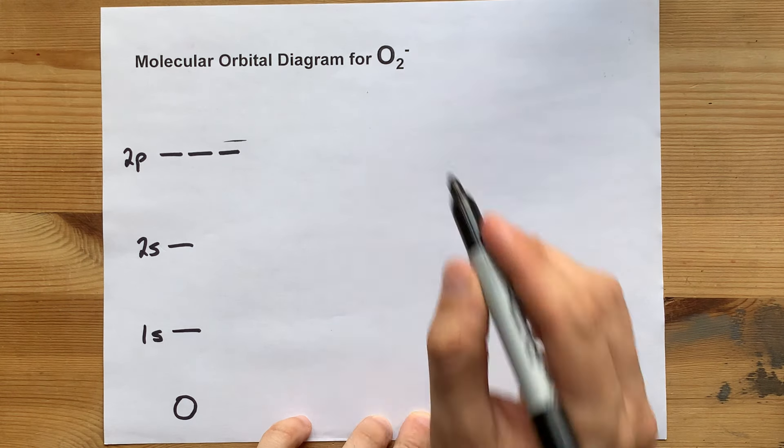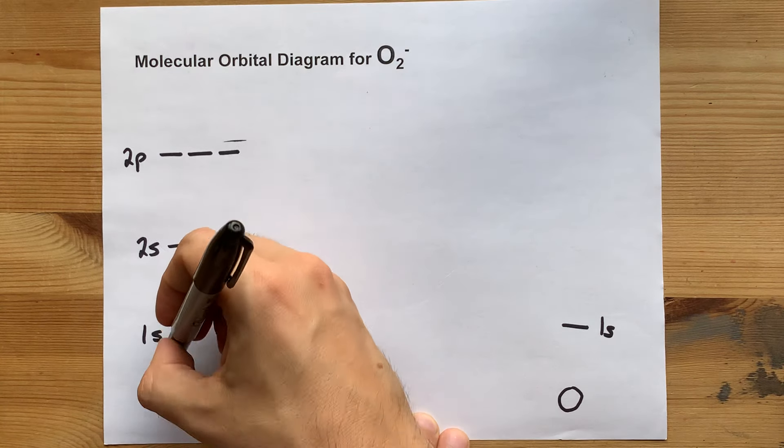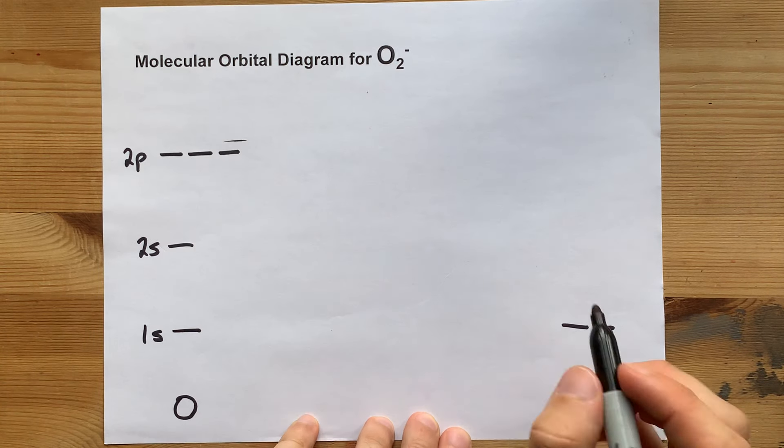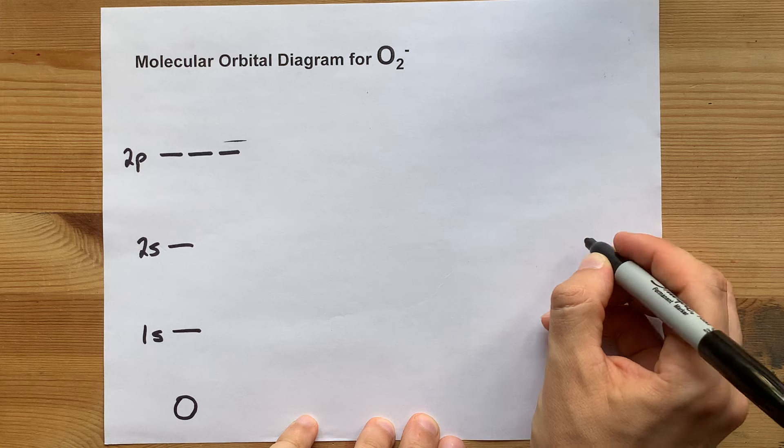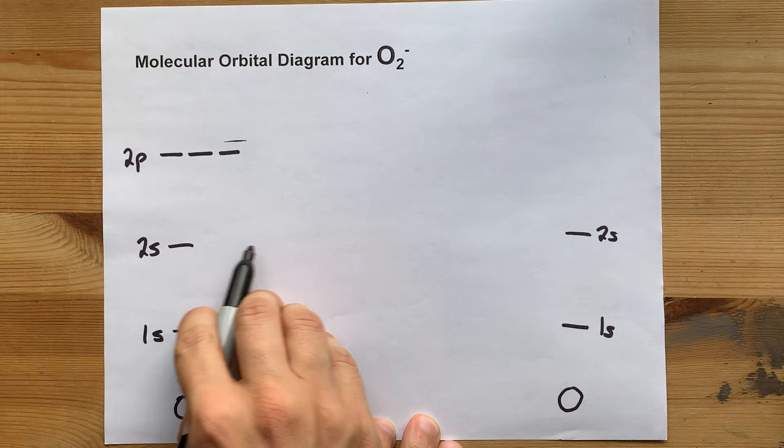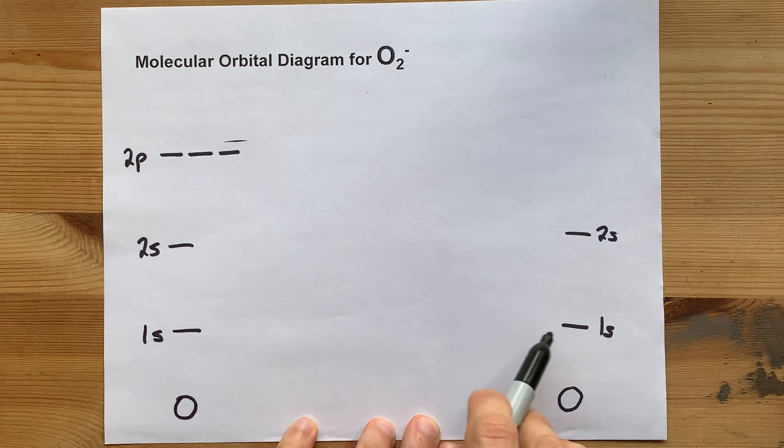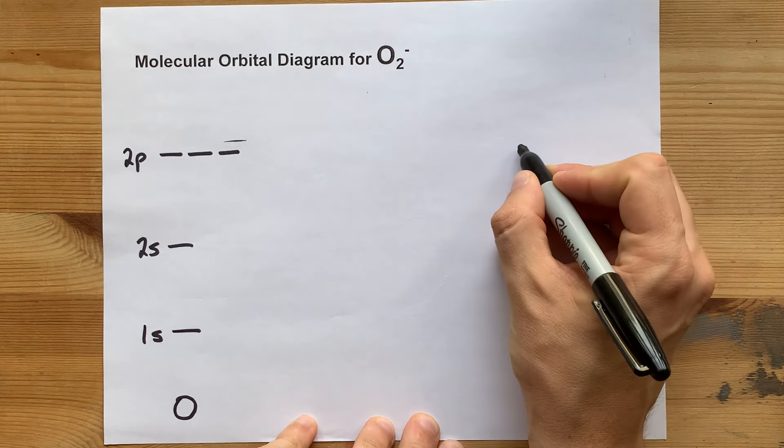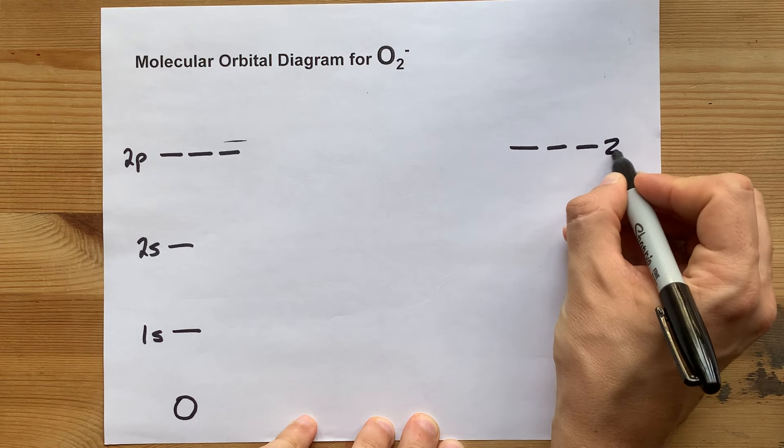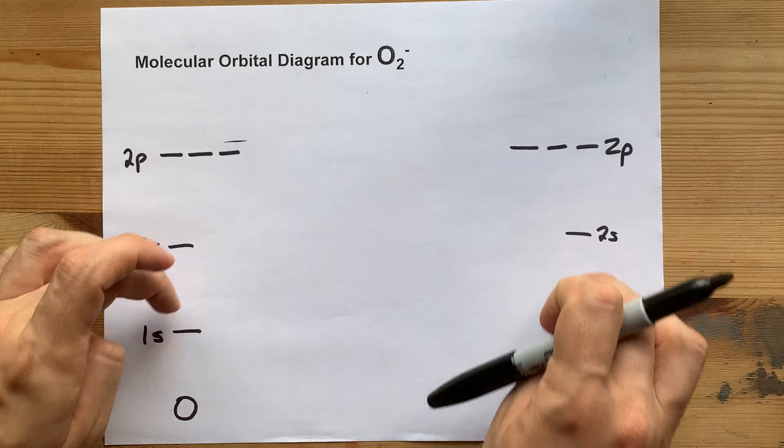This molecule is made of two oxygens, so you need to copy out this same atomic orbital scheme on the other side of your paper, making sure that the 2s energy levels are at the same height, the 1s energy levels are at the same height, and the 2p energy levels are at the same height. They're the same atom, so they have the same relative energies.